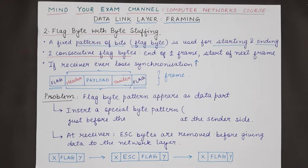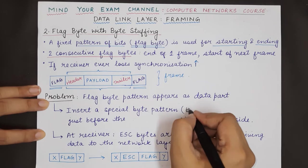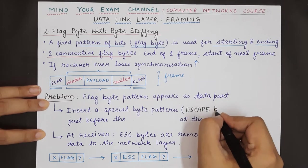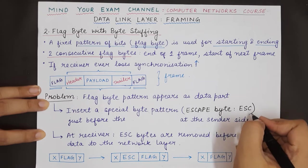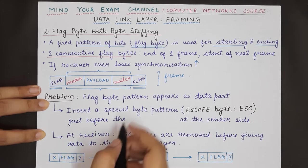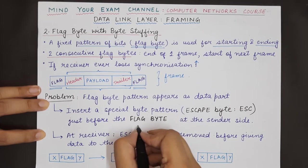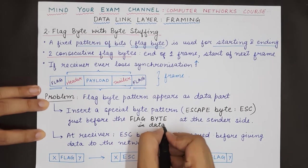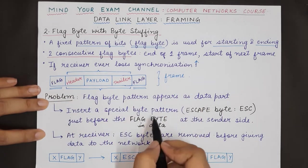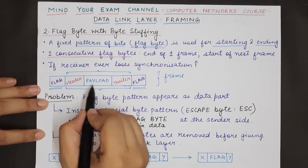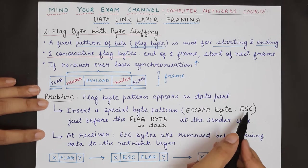The solution is byte stuffing. We insert a special byte pattern known as the escape byte — denoted as ESC — just before any flag byte that appears in the data section. We do not append this escape byte in front of the starting and ending flags; only when the flag byte pattern appears in the payload do we add an escape byte before it.